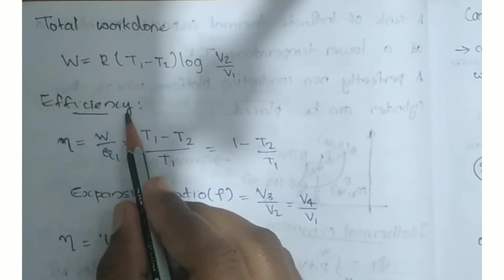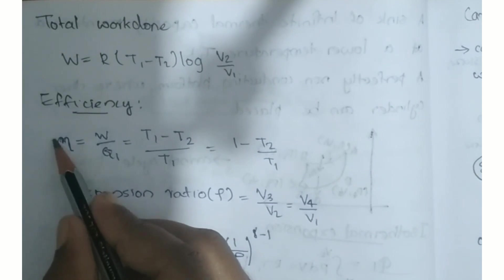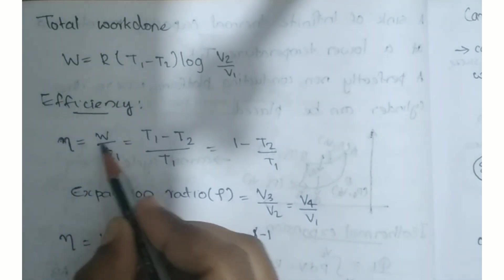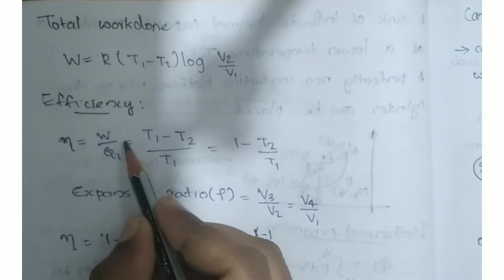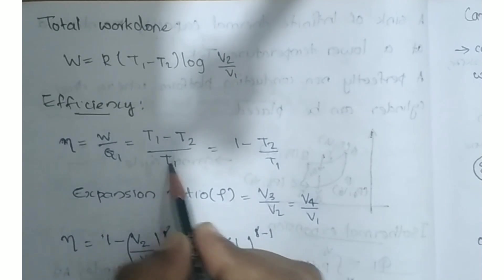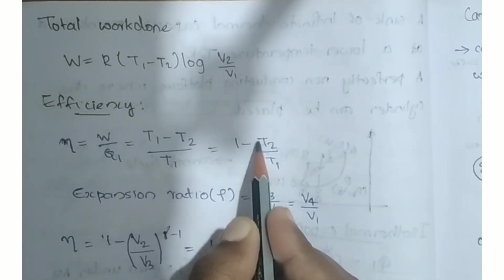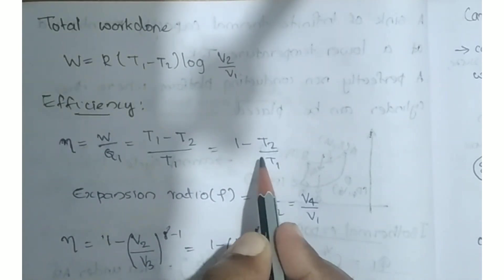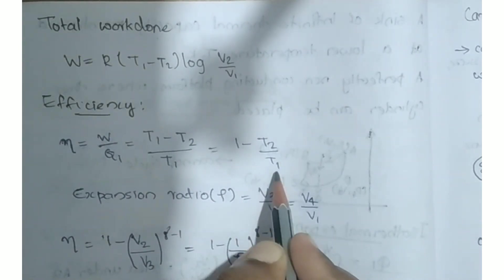Efficiency is equal to W divided by Q1, which equals (T1 minus T2) divided by T1, which equals 1 minus T2 divided by T1.